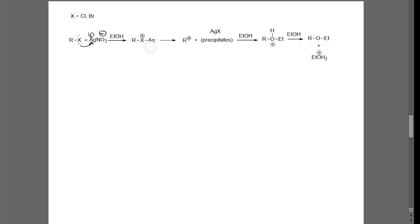Our halogen is going to bind to the silver, making that a better leaving group. Our X — which is either a bromine or a chlorine — is bound to the silver, making that a better leaving group. So now our leaving group will leave, and we will form our carbocation intermediate. The precipitate forms, and that's what we're seeing to measure the rate.